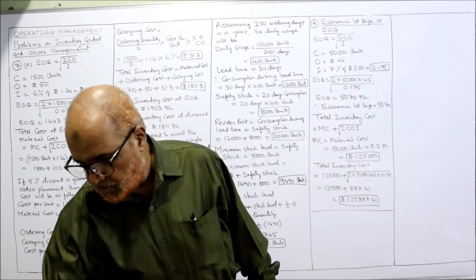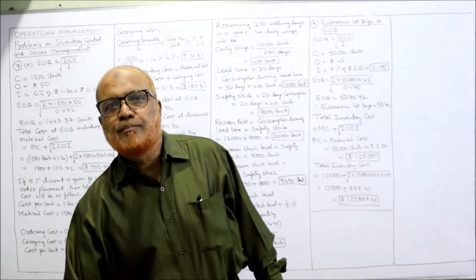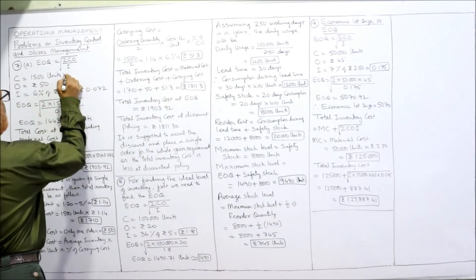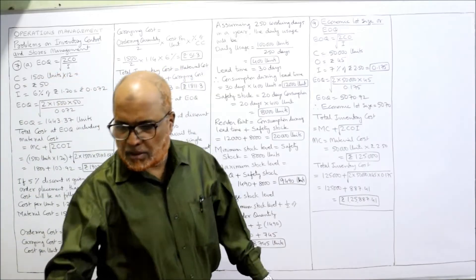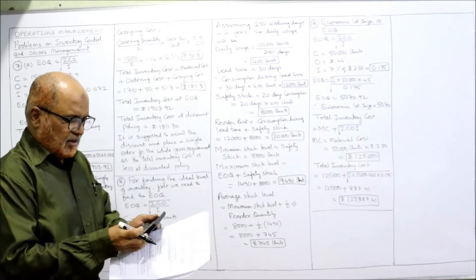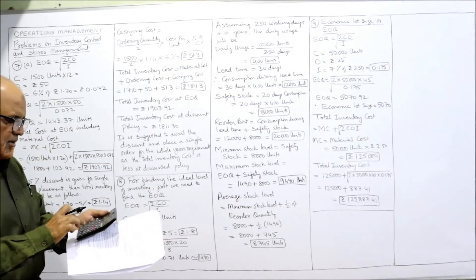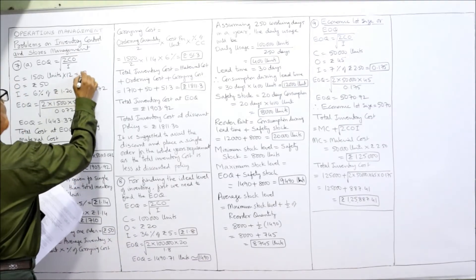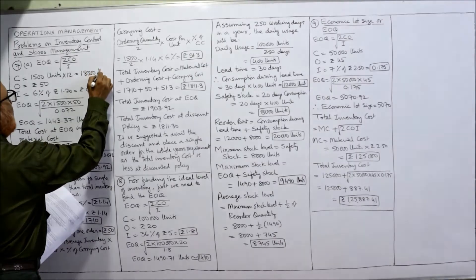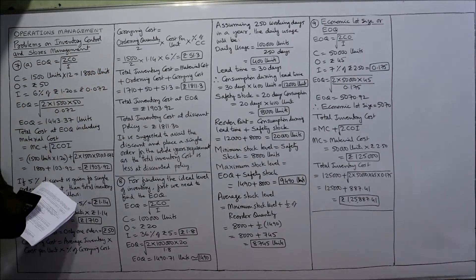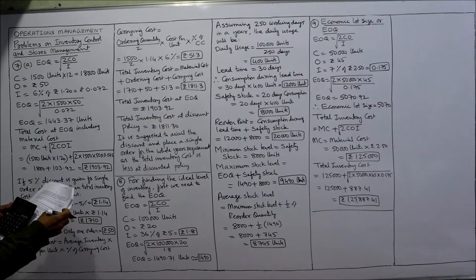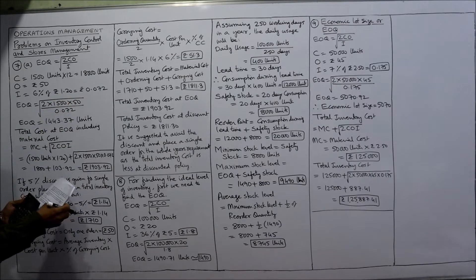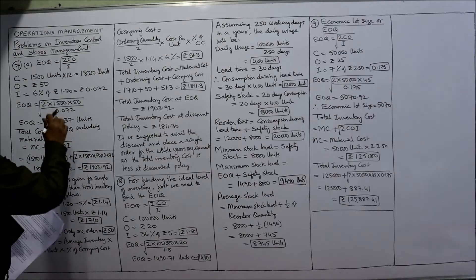Here every month is 1500, so we need per annum: 1500 into 12 months equals 18,000 units per annum. Ordering cost is 50 rupees, and the carrying cost is 6% of 1.20 per unit, which comes to 0.072.